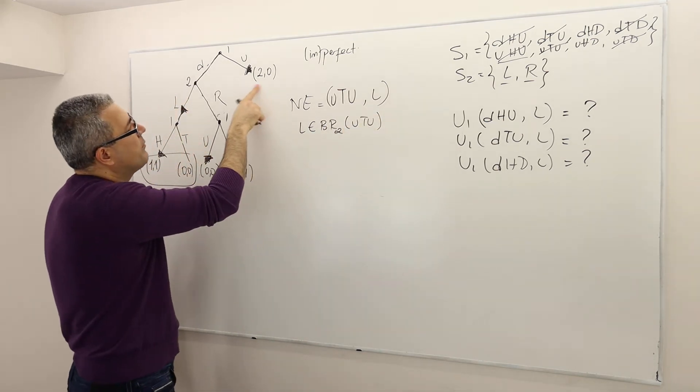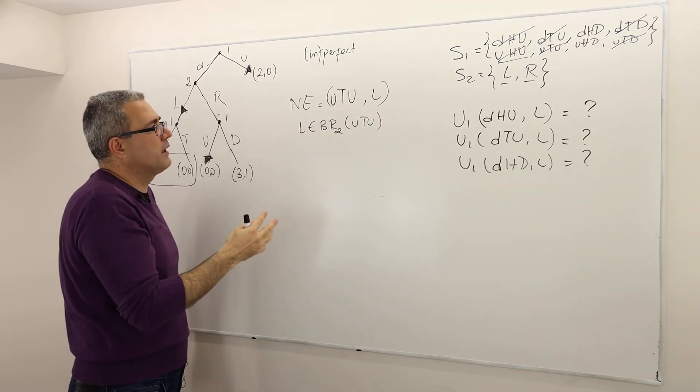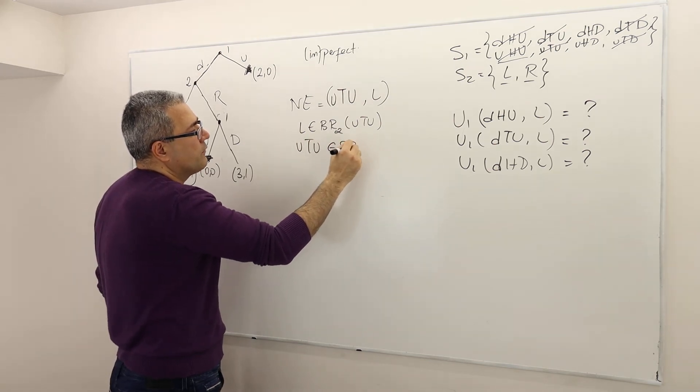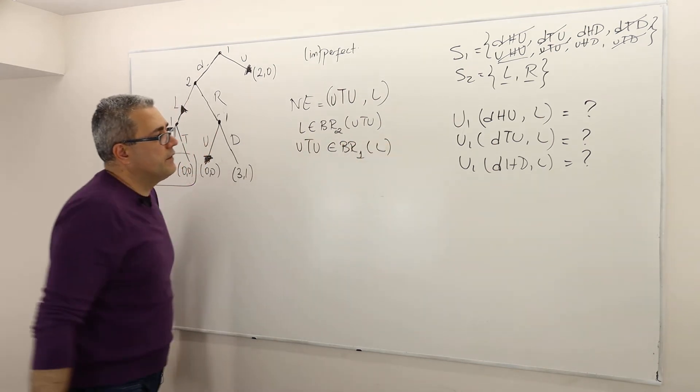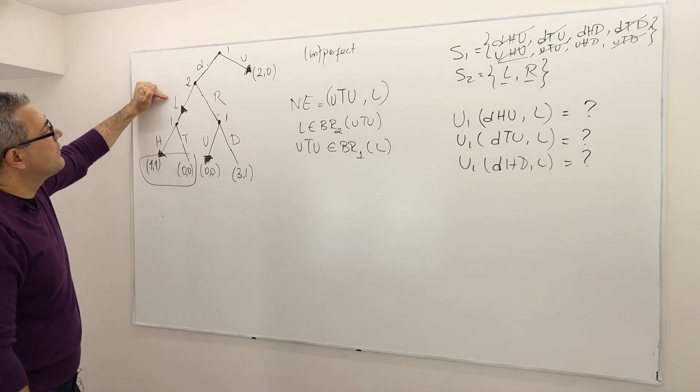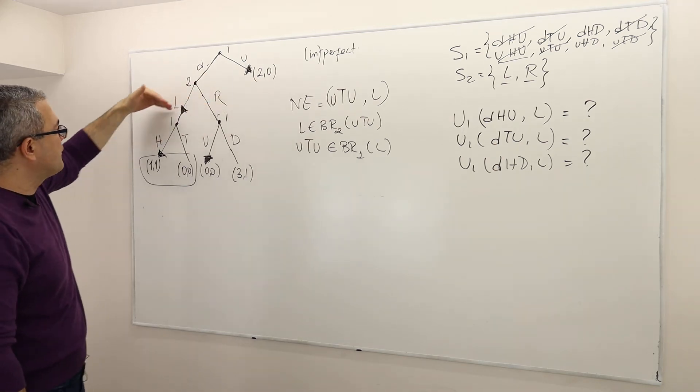Why is that? Well, because the first guy is finishing the game. So both L and R, in fact, best response. Well, whatever. What about player one? Is this a best response for player one? If the second guy is playing left, the answer is playing U is actually giving him two payoffs.